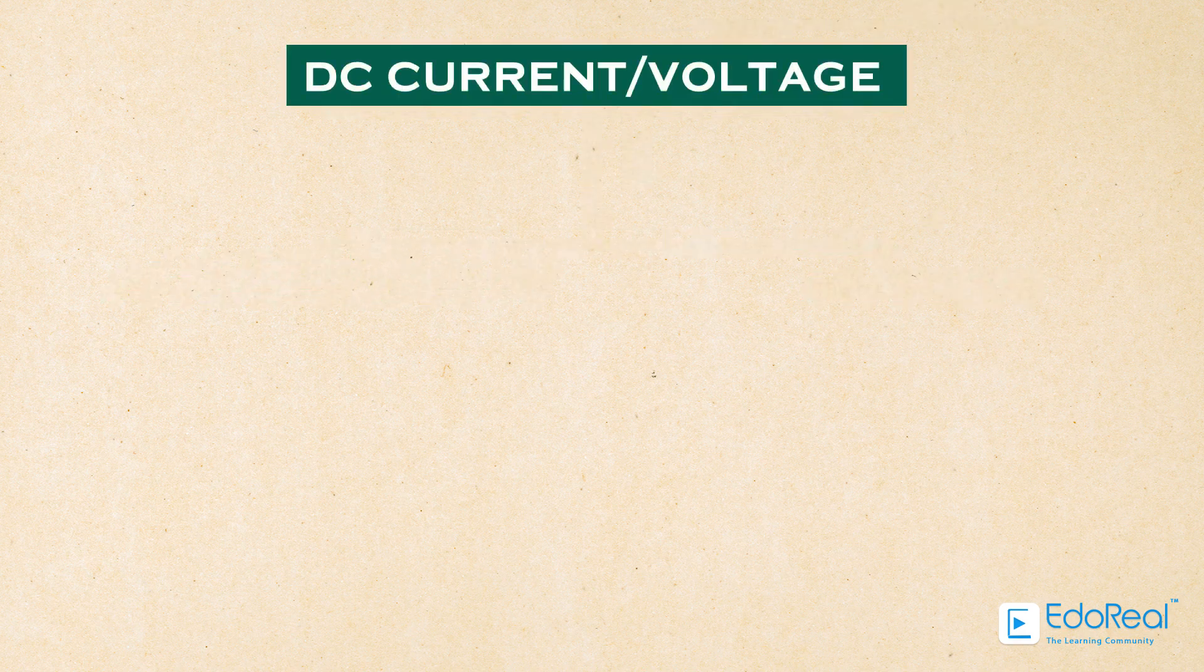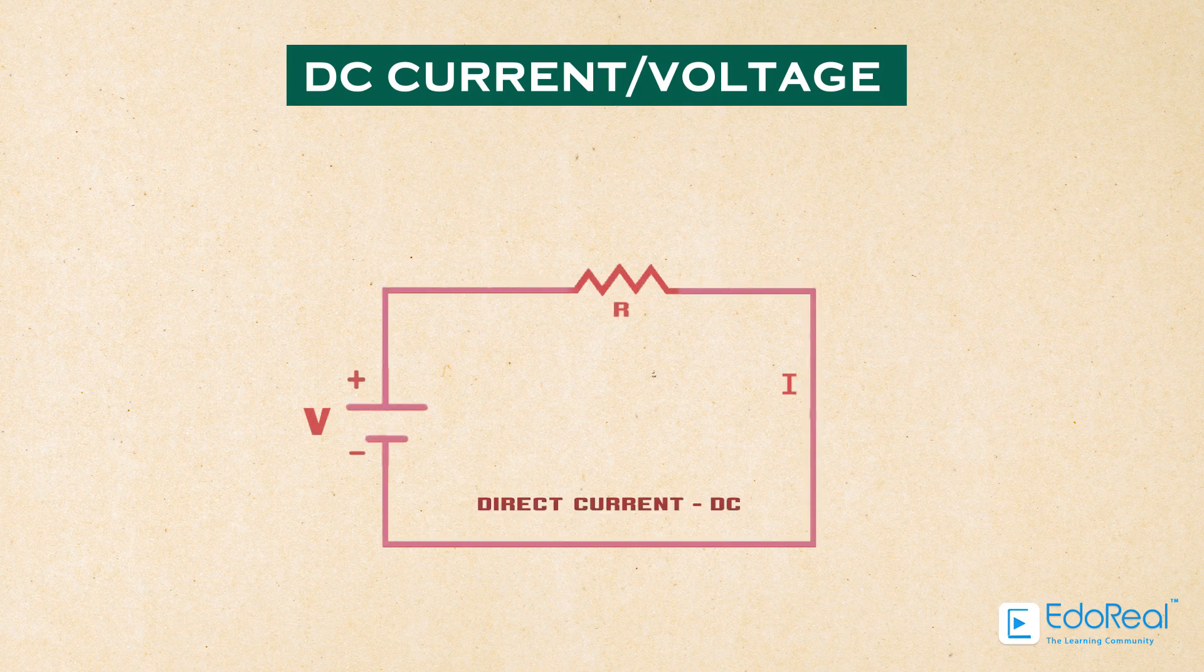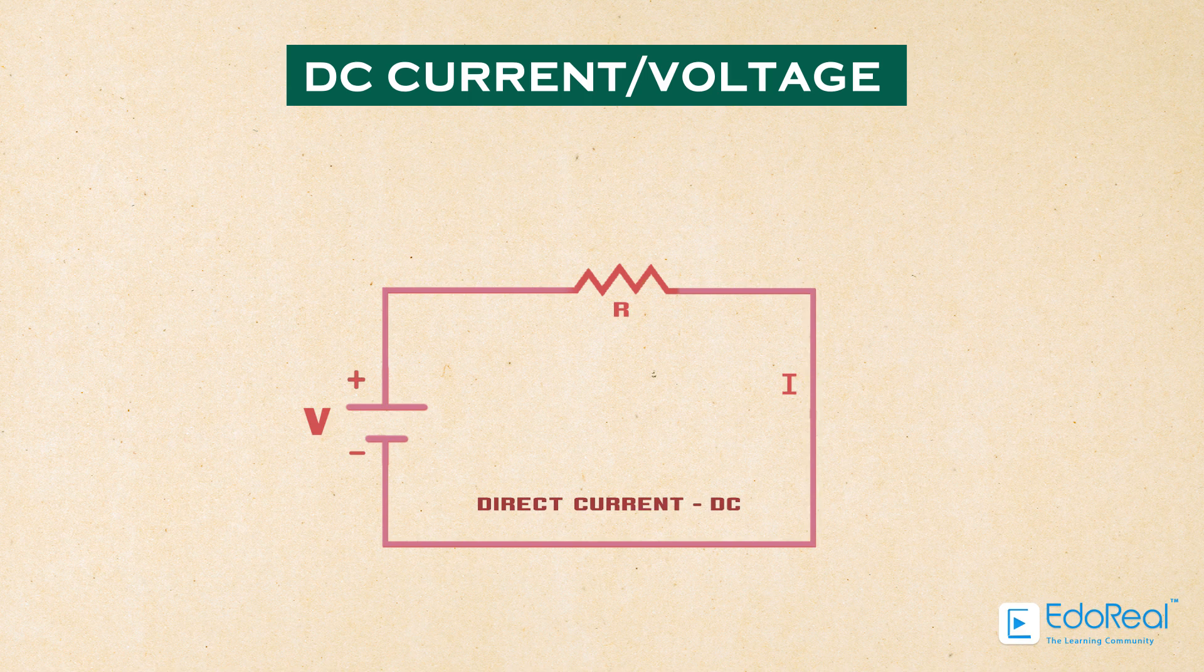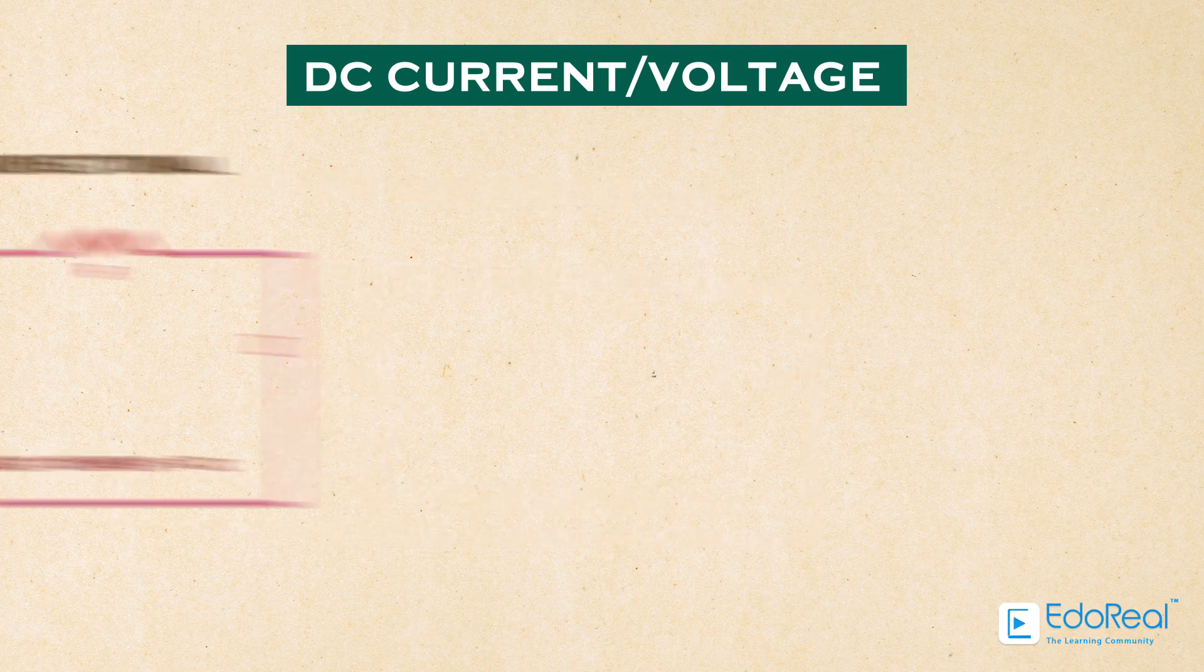DC circuits use direct current. Direct current is a form of electrical current or voltage that flows around an electrical circuit in one direction only, making it a unidirectional supply.